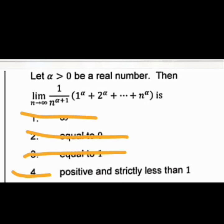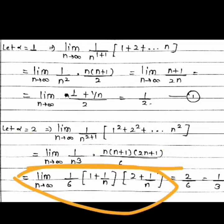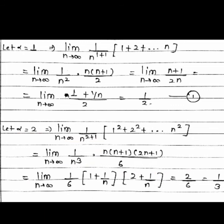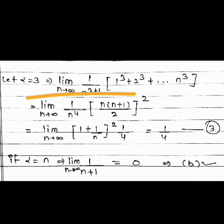To confirm, let's try α = 2. The sum 1² + 2² + ... + n² = n(n+1)(2n+1)/6. So the expression is (1/n³) × n(n+1)(2n+1)/6. Simplifying and taking the limit as n → ∞ gives 2/6 = 1/3. Again positive and strictly less than 1, consistent with option D.